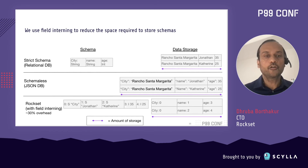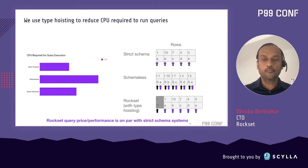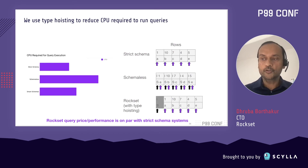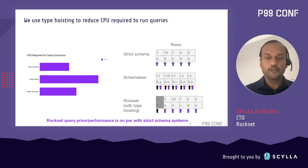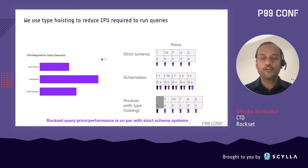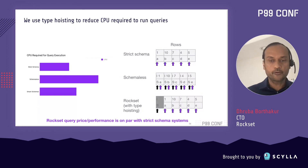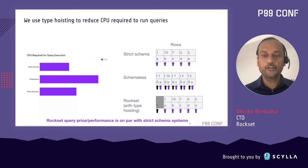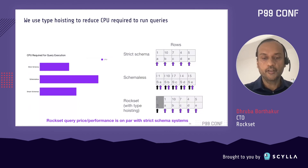Another technique we use is called type hoisting. Rockset supports multi-type columns, but if all the values in a column are the same type, we hoist the type at the beginning of the column or block. This ensures the amount of CPU needed to scan through using vectorized instructions is as efficient as a traditional strict schema system.